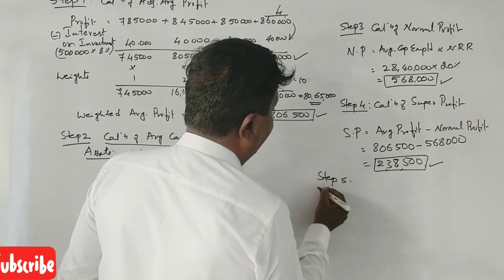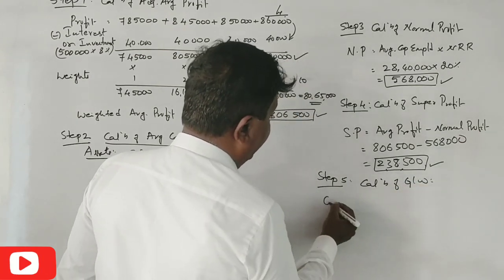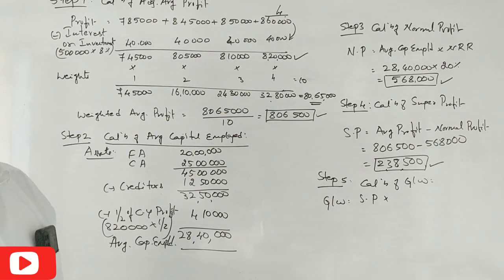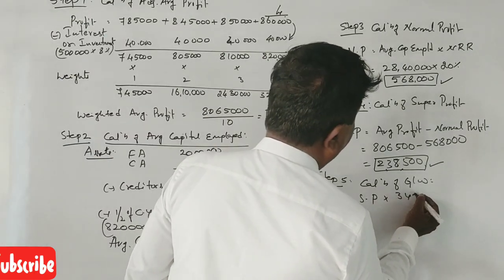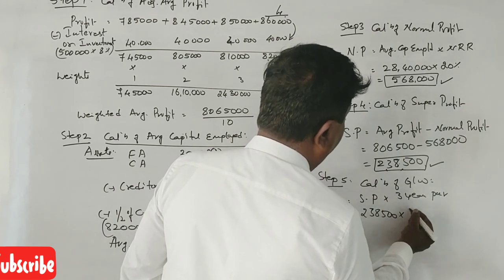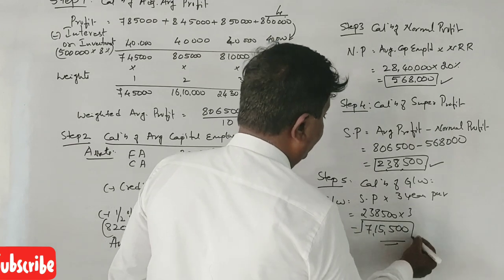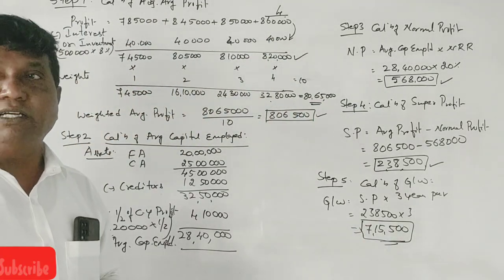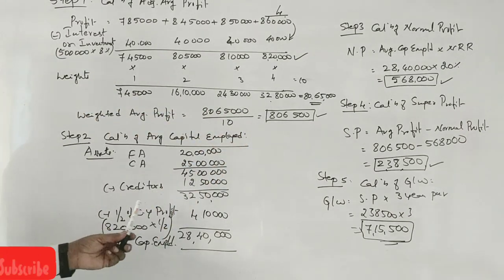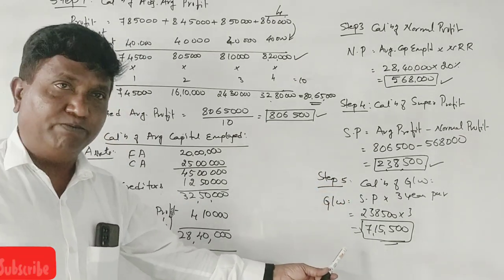Last step, step number 5: Calculation of goodwill. Goodwill equals super profit times the years purchase. 2,38,500 times 3 years equals 7,15,500. This is the goodwill. This is a 14 marks question. Step one: adjusted average profit. Second step: average capital employed. Third is normal profit. Fourth is super profit. Fifth is goodwill.